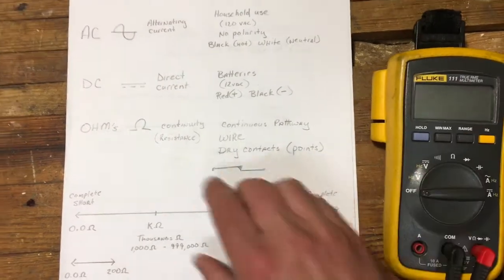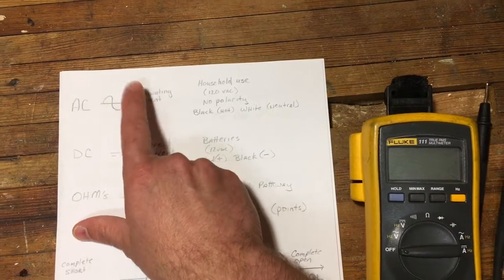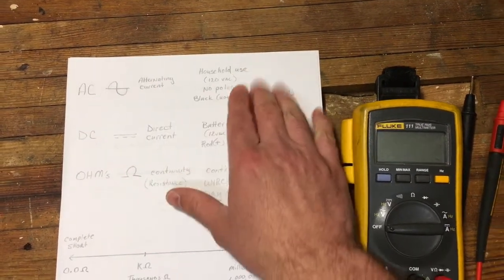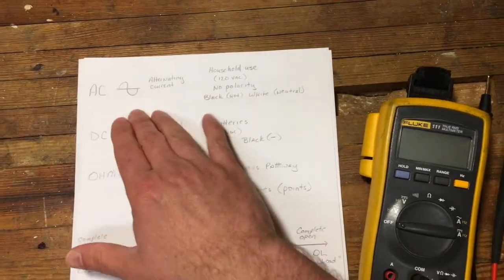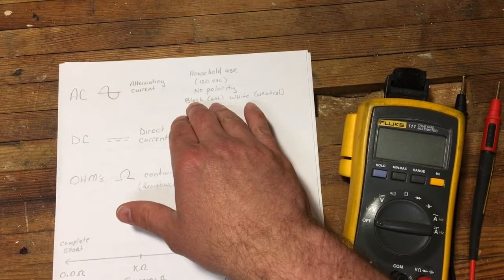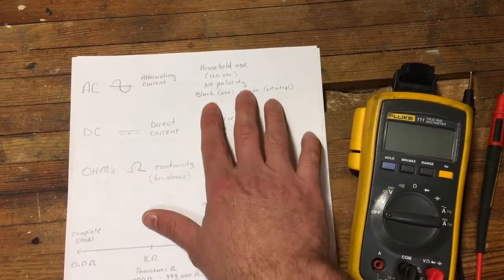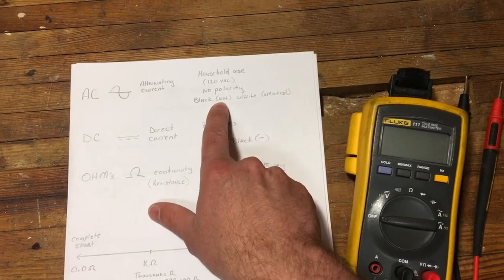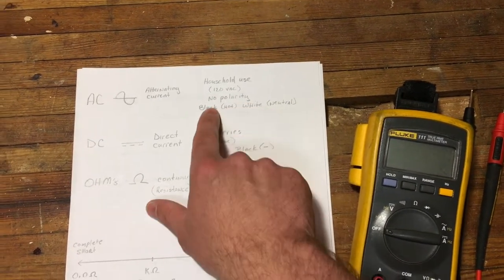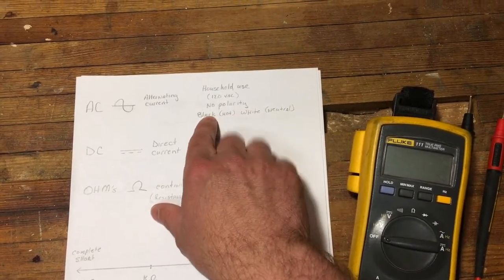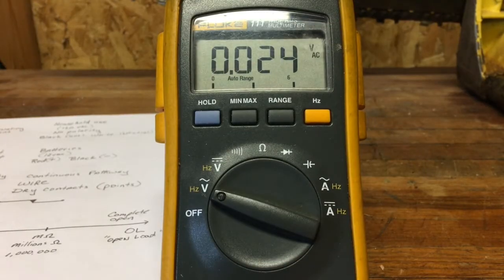You've got volts with the squiggly line which means AC - that's a sine wave, alternating current. It's usually used in a house at 120 volts or more, could be 240. This is the dangerous stuff you need to be careful with. There's no polarity - the wire colorings are usually black and white, black being the hot side, white being the neutral. Let's measure for AC voltage. That's zero volts. That's 120 volts, and there's no polarity.